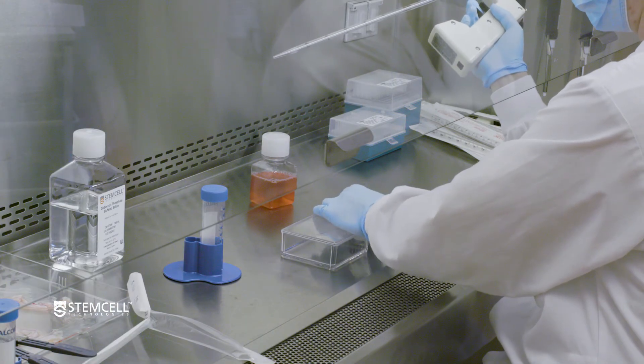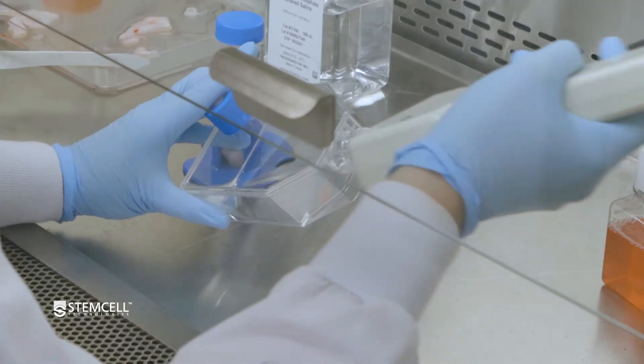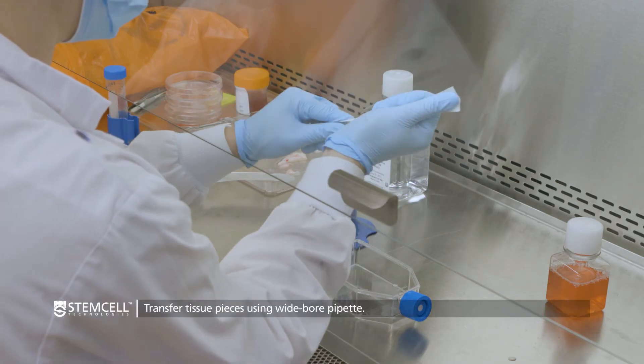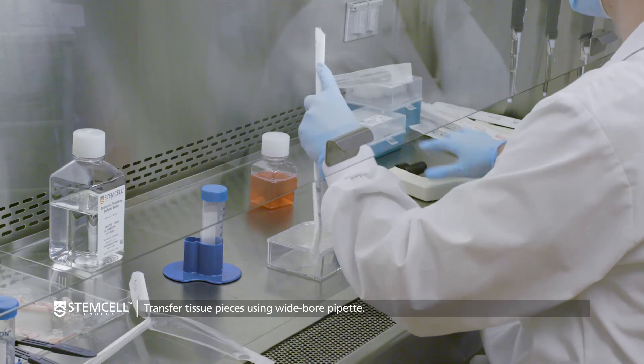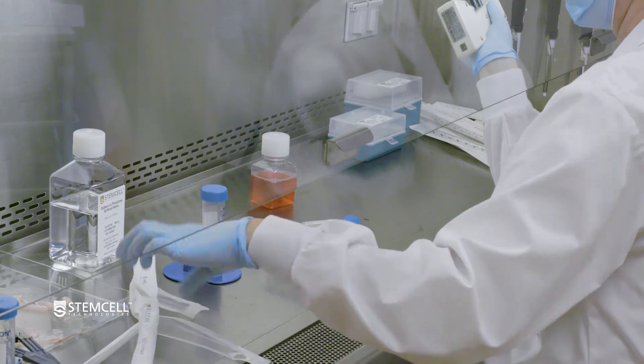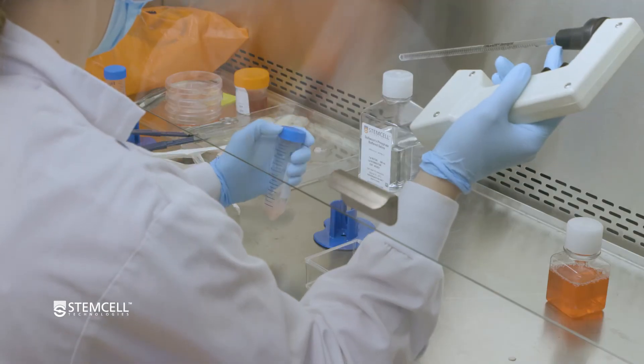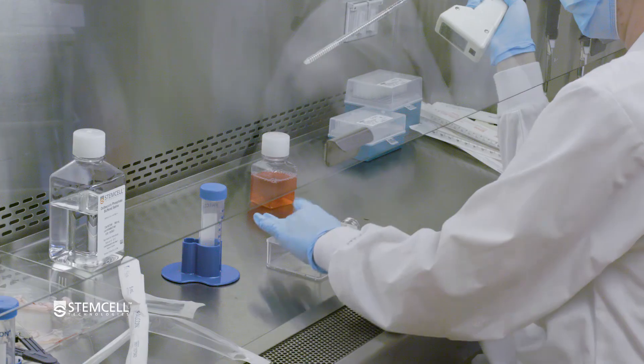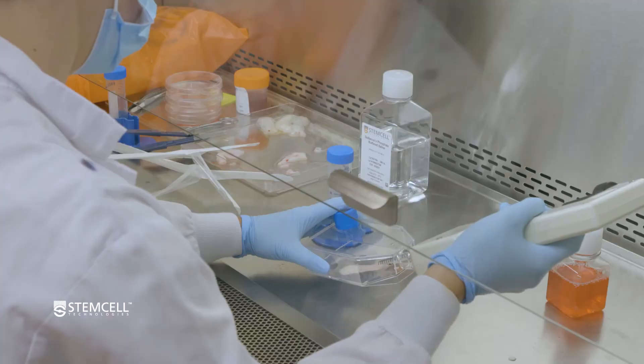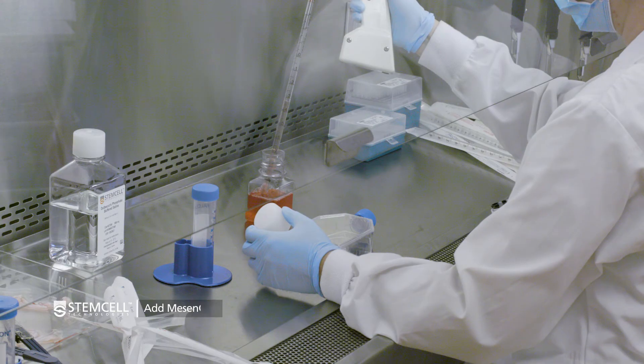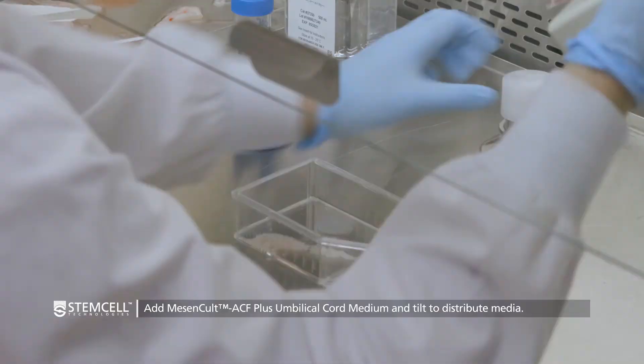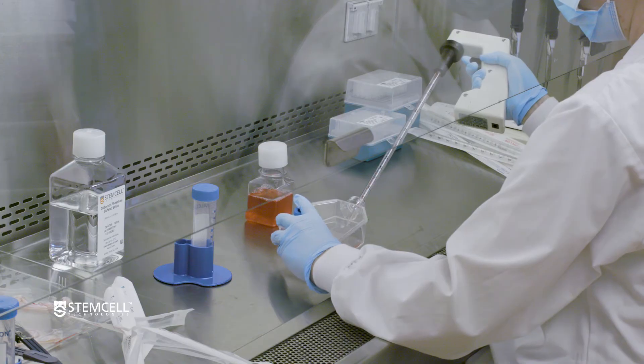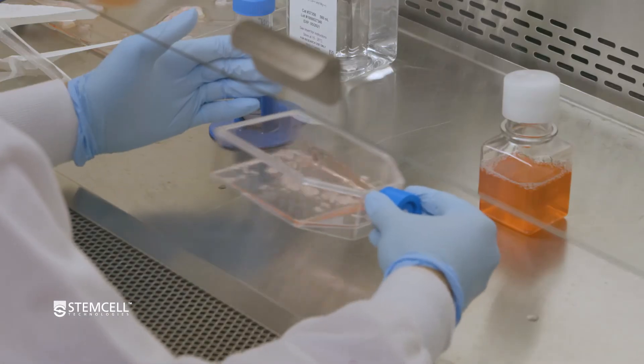Before plating the tissue pieces, remove PBS from cultureware. Divide and transfer tissue pieces into pre-coated cultureware using a wide-bore pipette. If you don't have a wide-bore serological pipette, break the end of a 5 ml serological pipette under sterile conditions. Slowly add 8 ml of complete MesenCult ACF Plus umbilical cord medium to each flask. Tilt to distribute the media and tissue pieces evenly around the flask.